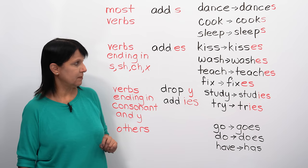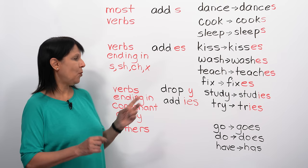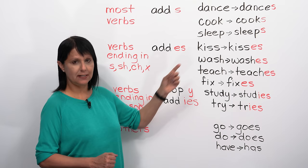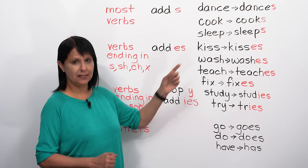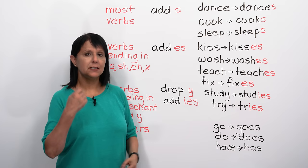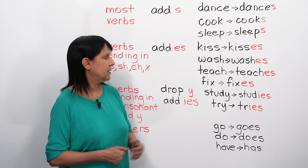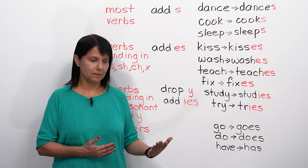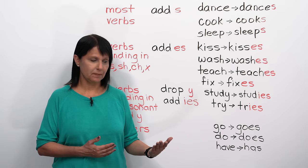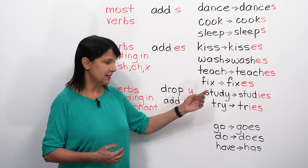Next, if the verb ends with an S, SH, CH, or X, then we need to add ES - and you can almost hear it. For example: kiss becomes kisses - it sounds a little bit longer, which tells us we need to add ES. Wash becomes washes, teach becomes teaches, fix becomes fixes.